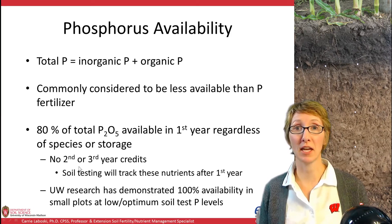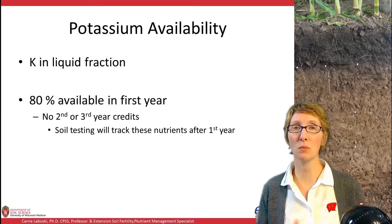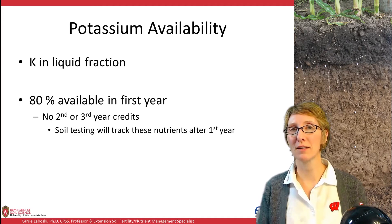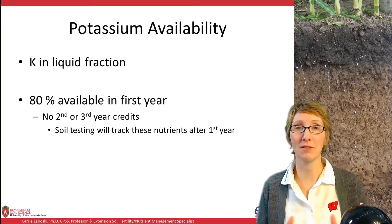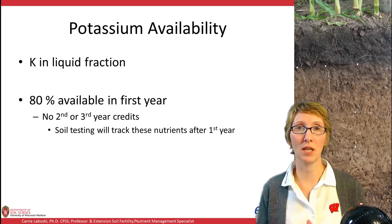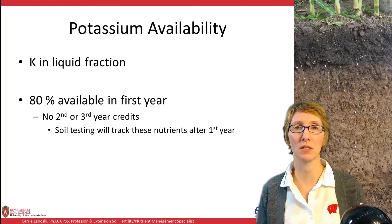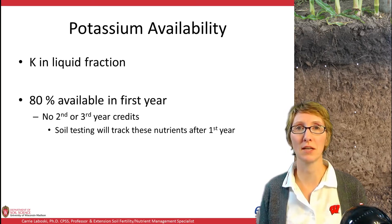We do not take second or third year credits for phosphorus — we pick those up in our soil test, which is how we track those nutrients. Potassium is really only in the liquid fraction, so technically it's 100% available, just like P. But we set the availability at 80%, again to give wiggle room for differences in nutrient composition as a pit is being agitated and hauled out, as well as application differences. Again, no second or third year credits for K, but we track those with soil test levels.